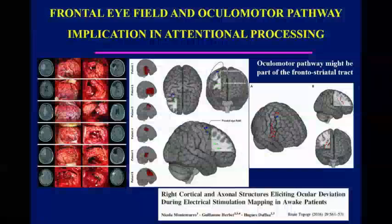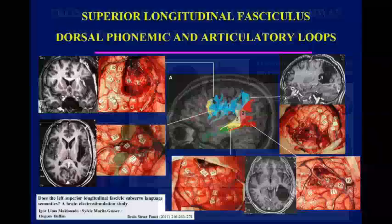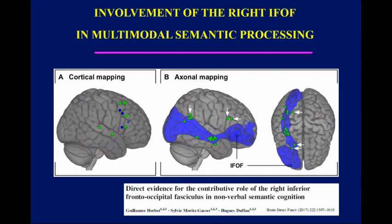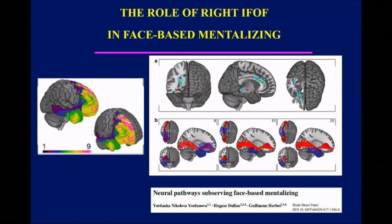You can map attentional processing also — yes, it's possible. You can map language, semantic processing, including in the right non-dominant hemisphere. Everything is now an evidence, but applied to this specific case when you are into the paralimbic system, even in the so-called right non-dominant hemisphere. And more and more we are also asking the patient if he is aware about the fact that he lost sometimes the possibility to give the correct answer — in other words, consciousness about what you know.